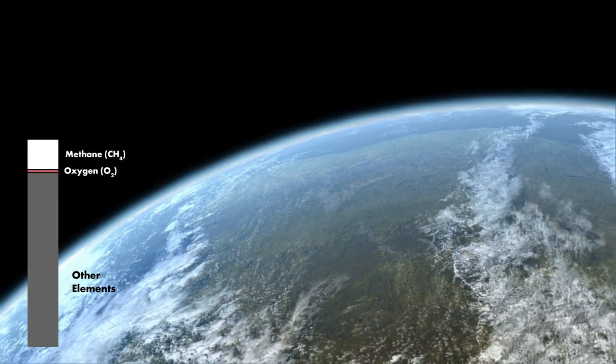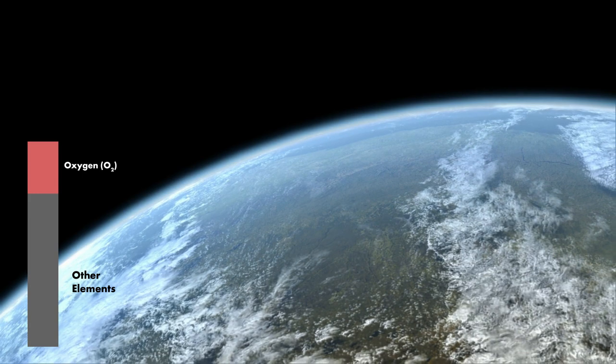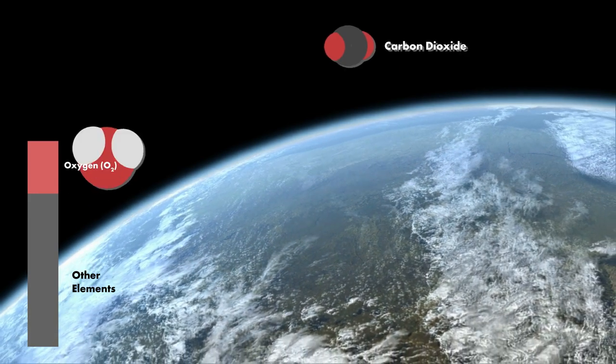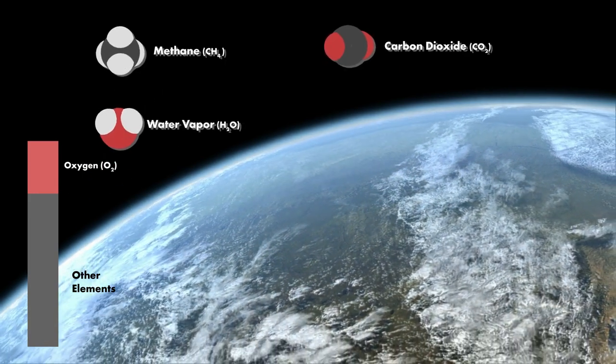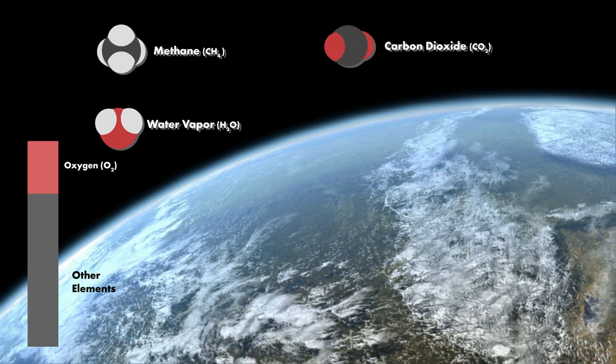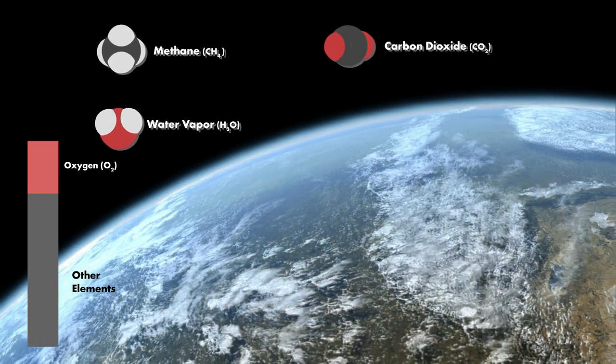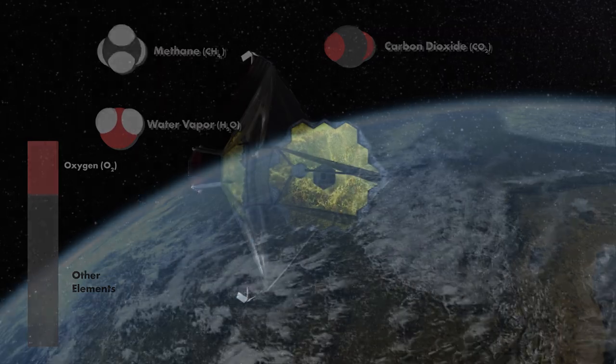Life changed the atmosphere of our Earth over time, increasing the oxygen and decreasing the methane. By taking a virtual sample of the atmosphere of these exoplanets, we can look for evidence of carbon dioxide, water vapor, and methane—signs of life as we know it.